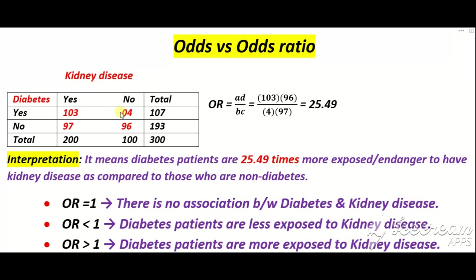In the 2x2 table: this is called A, this is called B, this is called C, and this is called D. The cross product is AD over BC. The value of A is 103, D is 96 — multiply these. B is 4 and C is 97 — multiply these. When you simplify, the odds ratio comes out to 25.49.